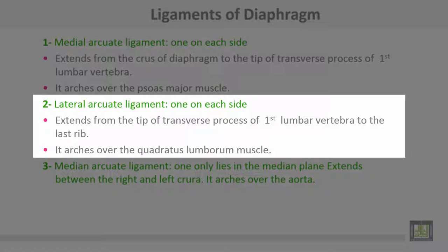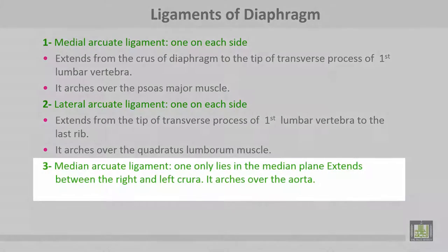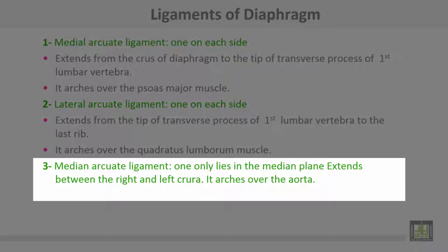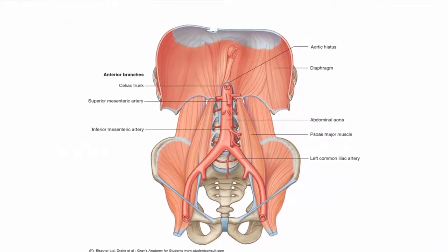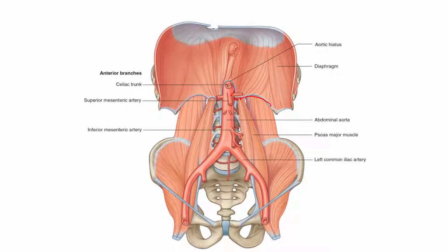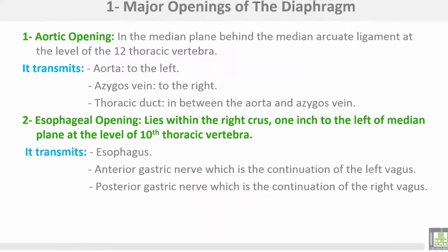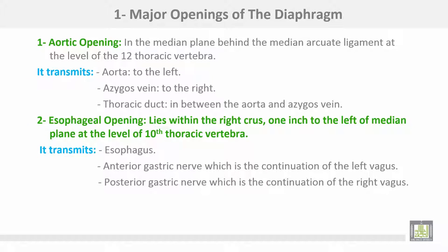Number two: the lateral arcuate ligament — one on each side — extends from the tip of the transverse process of the first lumbar vertebra to the last rib, arching over the quadratus lumborum muscle. Number three: the median arcuate ligament — one only — lies in the median plane and extends between the right and the left crura, arching over the aorta.